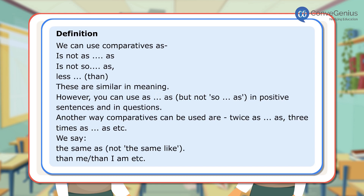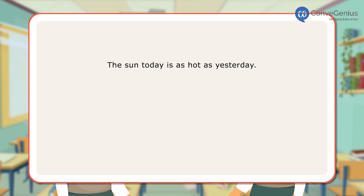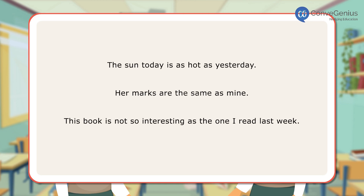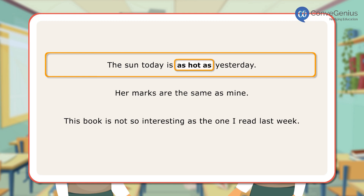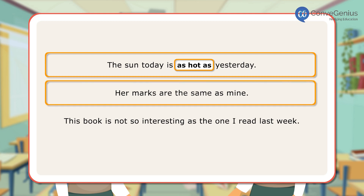Let us look at a few sentences. The sun today is as hot as yesterday. Her marks are the same as mine. This book is not so interesting as the one I read last week. In the first sentence, 'as hot as' is used since it is a positive sentence — we can use 'as...as' but not 'so...as' in positive sentences and questions. In the second sentence, 'the same as' is the comparative form used. We say 'the same as,' not 'the same like.'